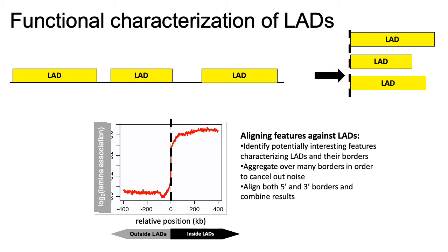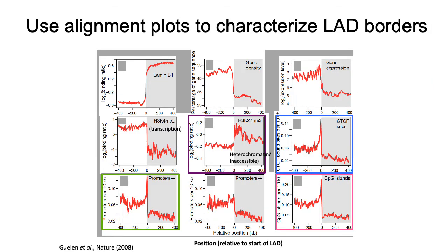By aligning these LADs relative to their starting point, you can identify interesting features about LADs. Looking at this plot on the bottom, the y-axis represents the log2 ratio of how many reads you find in your foreground DAMID experiment relative to background or your control experiment. As you'd expect, because LADs are called based on the enrichment of reads in your foreground experiment, you see a big spike in the log2 lamin association of the genome basically right where the LAD starts. People have generally spent a lot of time characterizing what kinds of genomic features are associated with LADs compared to regions of the genome outside of LADs.